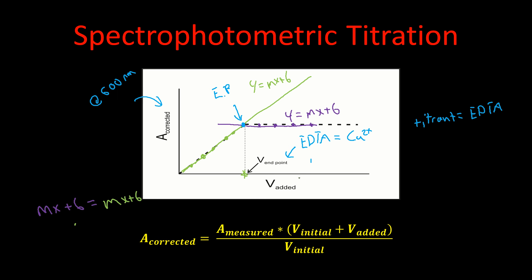You're going to do a number of replicates of this, and so you're going to be able to determine your equivalence point, which will tell you how much copper you have in your unknown. You should be able to develop a standard deviation from that.